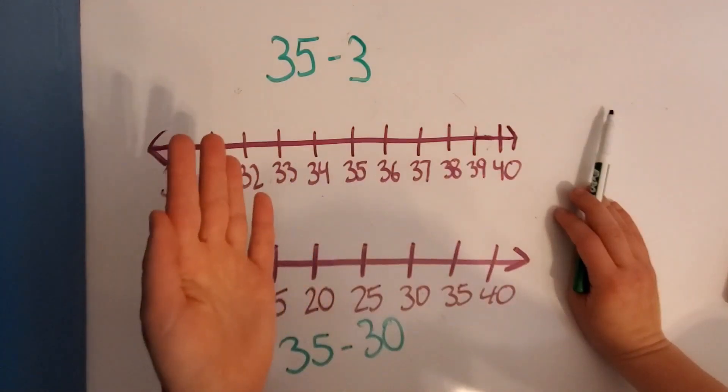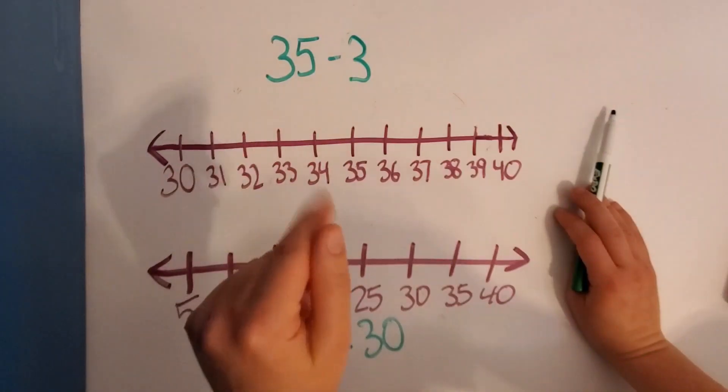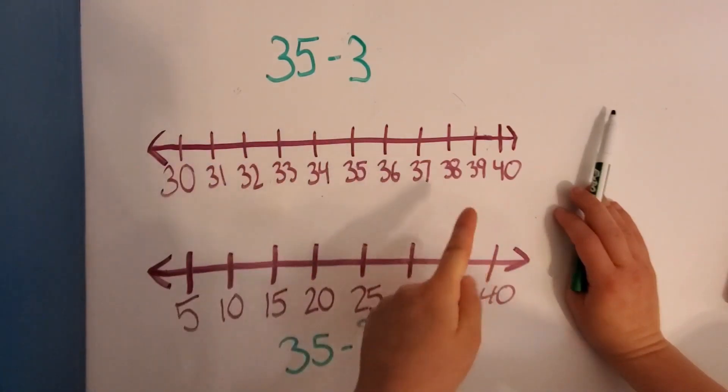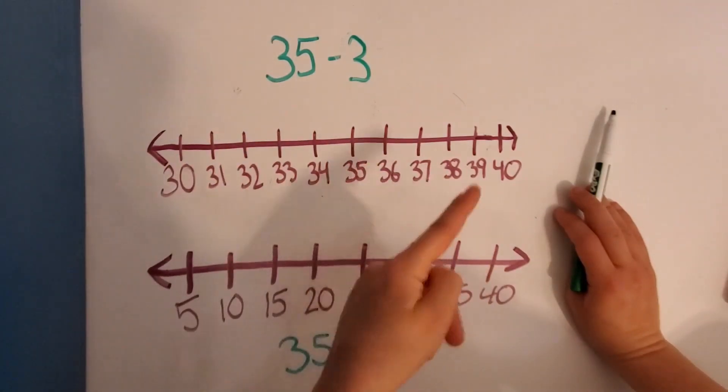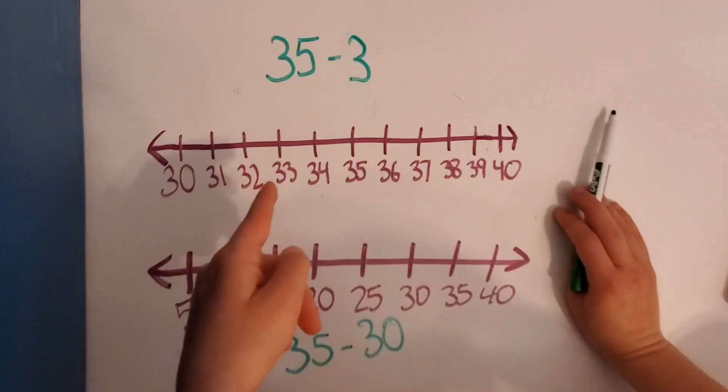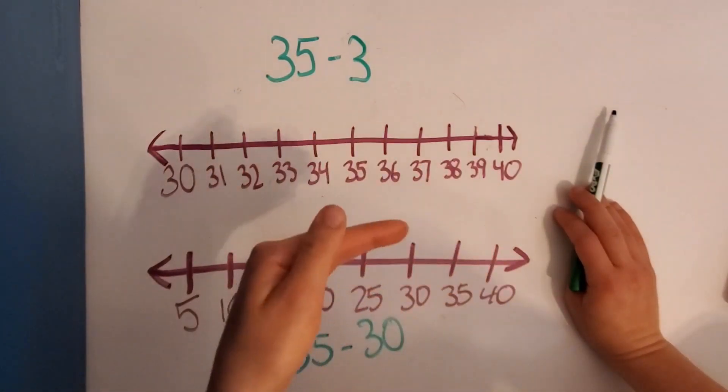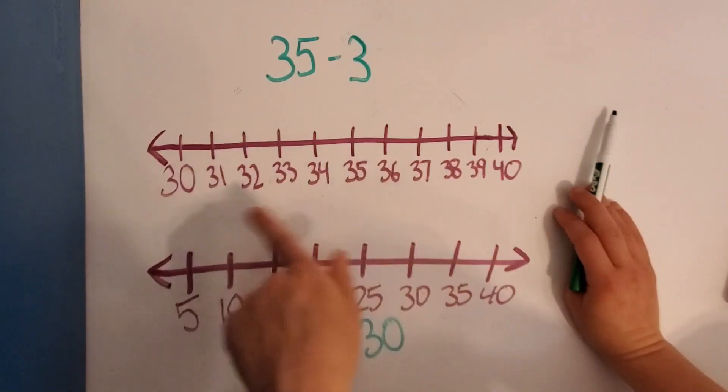Now to subtract mentally, which means in your head, you count backwards, right? We're going to keep using, we're going to use a number line a couple times to subtract and count backwards. But soon, if you keep practicing this, you'll be able to do it in your head without drawing a number line.